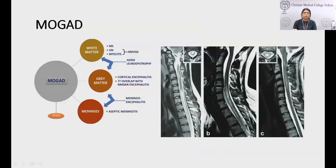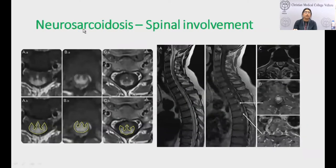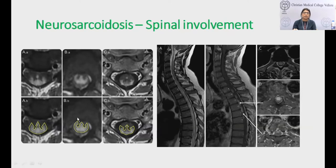MOGAD can also affect the cervical and thoracic cord but classically involves the conus cord. Neurosarcoidosis has a classical MRI presentation showing subpial enhancement especially in the ventral area, and the trident sign — where the dorsal subpial region takes up contrast looking like a trident.